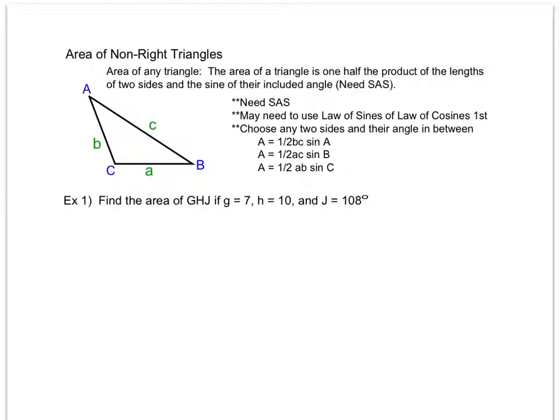I'm going to start by drawing my triangle. I have triangle GHJ where g = 7, h = 10, and J = 108 degrees. Notice that I have a side, an angle, and a side, so I don't need to use law of sines or law of cosines. I can go ahead and plug them right into the formula.